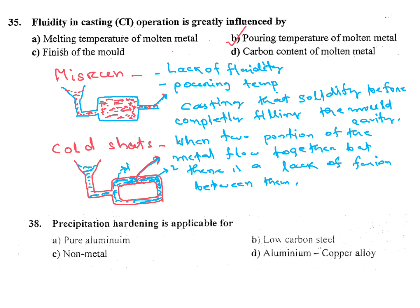Precipitation hardening is applicable for: A) pure aluminum, B) low carbon steel, C) non-metals, D) aluminum copper alloys. This question was already discussed in my previous video. Precipitation hardening applies to non-ferrous alloys. The answer here is D — aluminum and copper alloys.